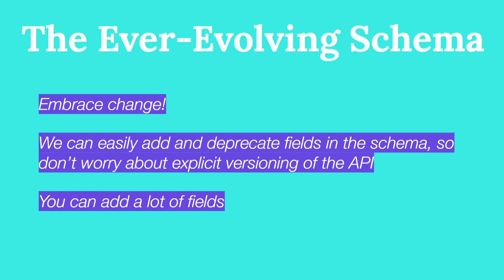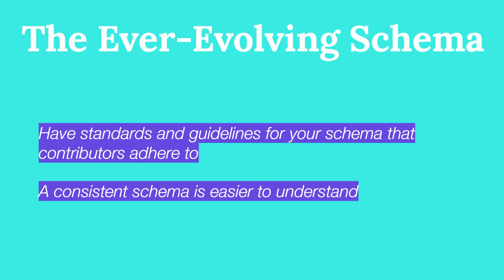Our next GraphQL strength is that GraphQL makes API changes easy. We can easily add and deprecate fields in the schema, so don't worry about explicitly versioning your API. You can add a lot of fields before you have a problematic number of fields in the schema, so just don't worry about it. Having clear standards or patterns for your schema can help your schema evolve in a maintainable way — that means a single way of representing errors, paginated lists, date times, and things like that. If everyone makes up new conventions, then there is no convention. Predictability matters for developing quickly, and it's much easier if we have consistent terminology, locations for things, and representations. This makes it easy to assume how to query data and what to expect. A consistent schema is easier to understand.